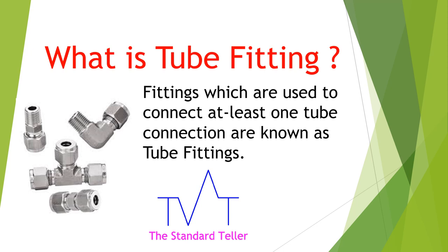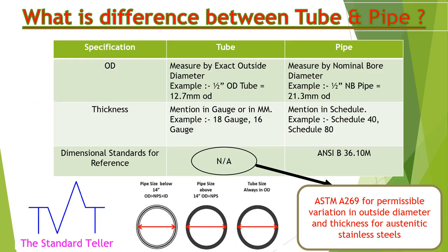The main question arises: what is the difference between tube and pipe? Tube is mentioned in outside diameter — for example, a half inch outside diameter tube equals 12.7 mm outside diameter. Whereas pipe is mentioned in nominal bore diameter — for example, a half inch nominal bore diameter pipe equals 21.3 mm outside diameter.